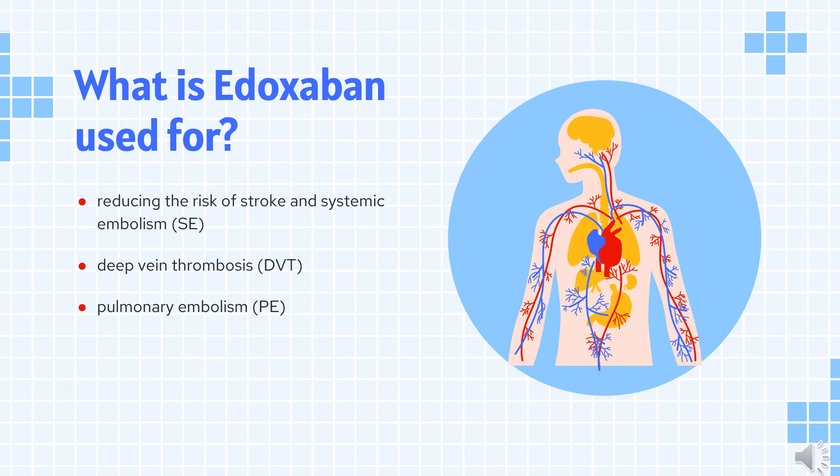What is Edoxaban used for? Edoxaban is indicated for reducing the risk of stroke and systemic embolism (SE) in patients with non-valvular atrial fibrillation (NVAF). However, it should not be used in patients with creatinine clearance (CrCl) greater than 95 mL per minute, because of increased risk of ischemic stroke compared to warfarin at the highest dose studied — 60 mg.